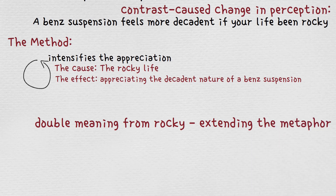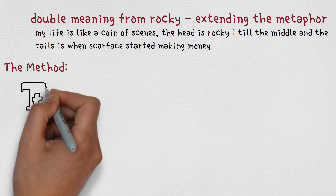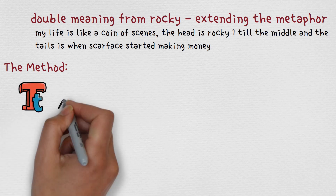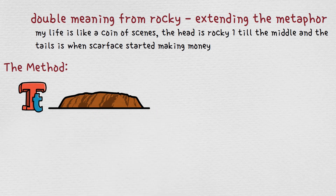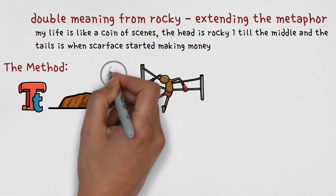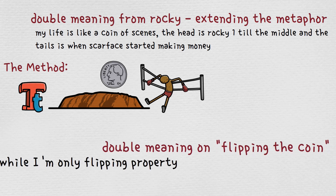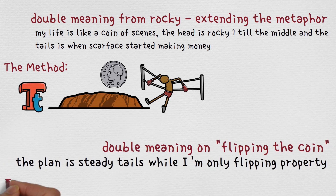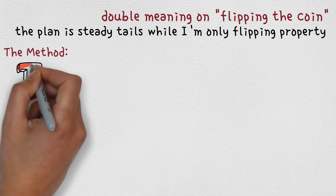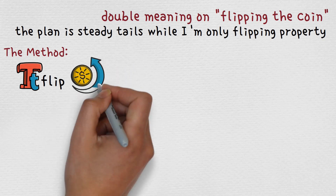Double meaning from Rocky, extending the metaphor: my life is like a coin of scenes — the head is rocky one till the middle and the tails is when Scarface started making money. The method: you pick a secondary meaning for a word and integrate it into a new context scheme. We took the adjective 'rocky' and made it into the movie Rocky, injecting it into a context scheme of life being like two sides of a coin. Double meaning on flipping the coin: the plan is steady tails while I'm only flipping property. You take the secondary meaning of a word and put it into a new context — from the coin, we insinuate the coin is flipping and then take the word 'flip' to mean buy low, sell high.